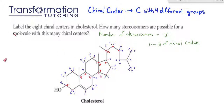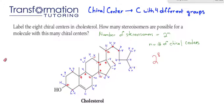Now that we have all the chiral centers, we can answer the second question: how many stereoisomers are possible for a molecule with this many chiral centers? The number of stereoisomers is equal to two to the n, where n is the number of chiral centers. This question already told us there are eight chiral centers, so even if we didn't know how to find them, we could have answered the second part — it has to be two to the eighth power. The hard part of this question was figuring out the chiral centers. I hope that I helped you and I look forward to seeing you in more organic chemistry videos. Please feel free to like, subscribe, or comment. This is Maya from Transformation Tutoring and I will see you next time.